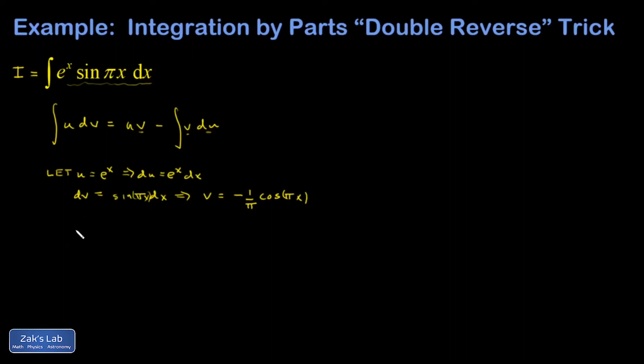Then we can plug into integration by parts. So I have my original integral. I don't have to write it for a minute. I'm just going to call it I. It's going to be UV. So that's negative e^x over π cosine πx minus the integral of V DU.